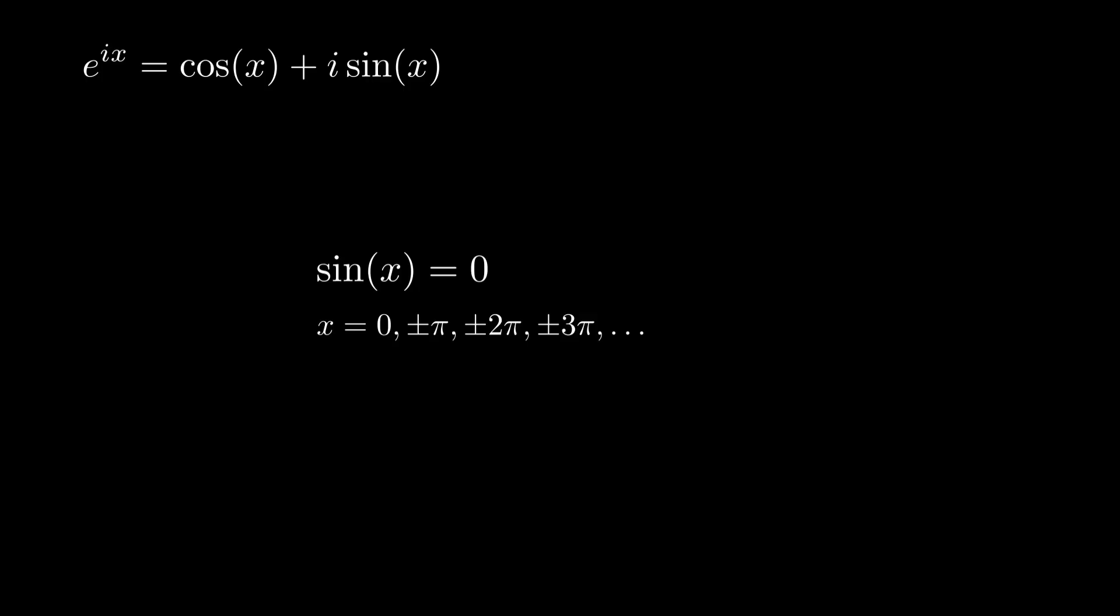And when it touches the imaginary axis, the real part is 0, meaning cosine of x equals 0. These correspond to points where x is an odd multiple of pi over 2: plus or minus pi over 2, plus or minus 3 pi over 2, plus or minus 5 pi over 2, and so on. This is the standard we need.